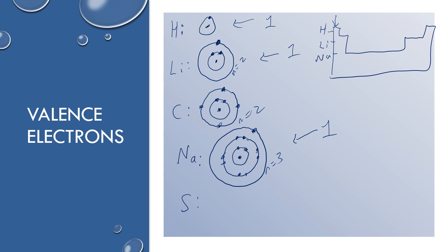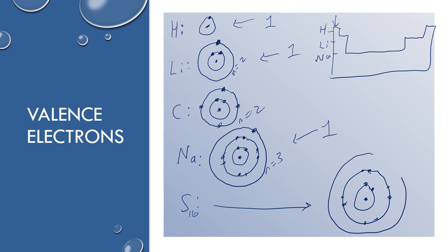Let's look at sulfur. Sulfur has 16 electrons: 2 in the first energy level, 8 in the second energy level — that's 10 total — and then 11, 12, 13, 14, 15, 16 go into the third energy level. So sulfur's valence shell is that third energy level, and it has 6 valence electrons.